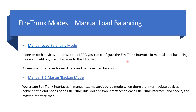Let's have a look at Ethernet trunk modes. The first is manual load balancing — this is a mode where one or both devices don't support LACP, so you configure the Ethernet trunk interface in manual load balancing and add the physical interfaces to the LAG. All member interfaces will forward data and perform load balancing in this case.